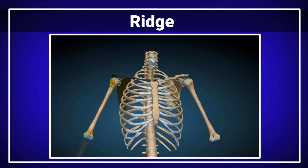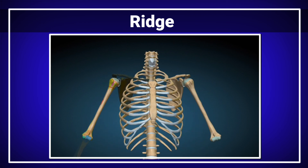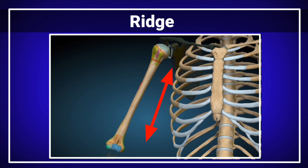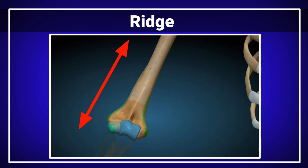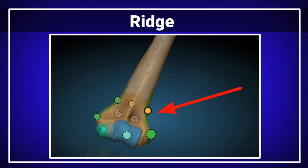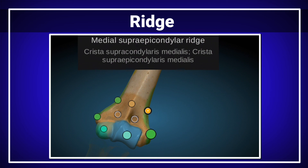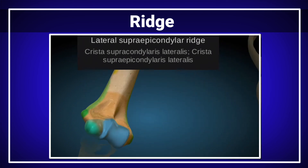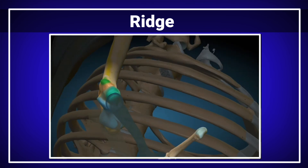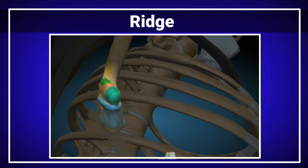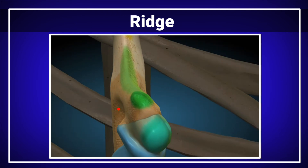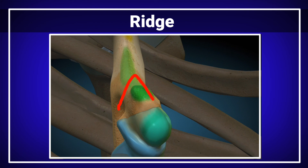The ridge: the linear elevations of the humerus bone are called the ridges. These include the medial supracondylar ridge and the lateral supracondylar ridge. These two ridges represent the linear elevation on the humerus bone.